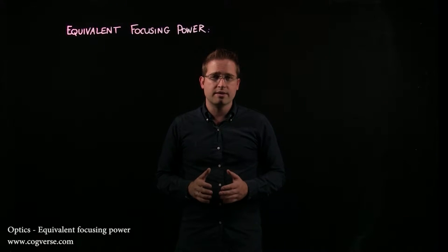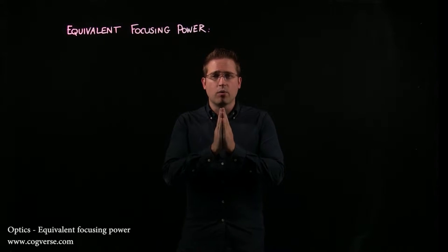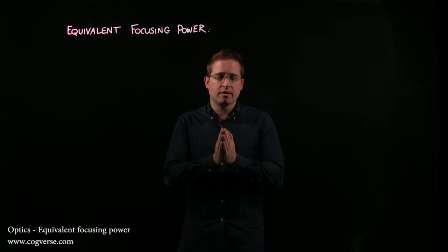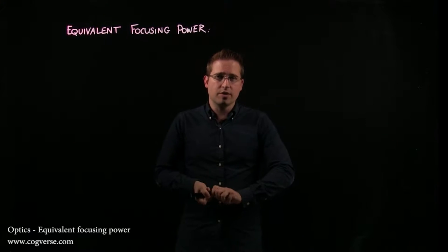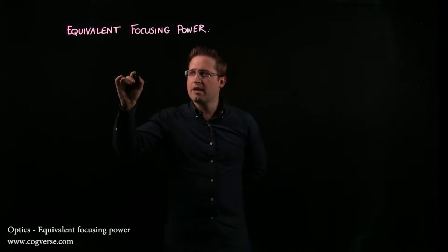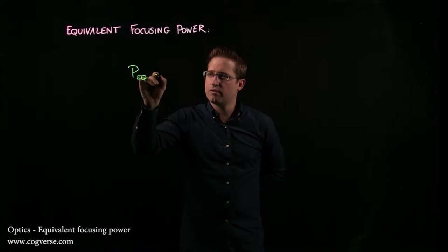When two thin lenses are assembled and placed one against the other, they behave like one unique lens. This equivalent lens has a focusing power called the equivalent focusing power, which is equal to the sum of the individual focusing powers.